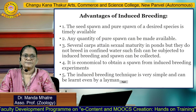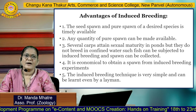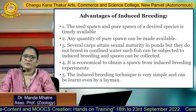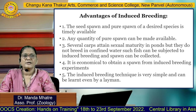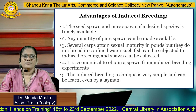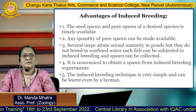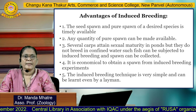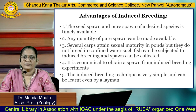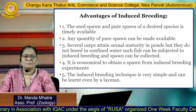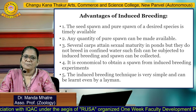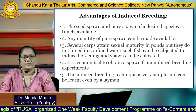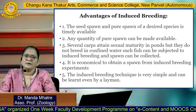Advantages of induced breeding: pure spawn of the desired species is timely available for the farmers. Any quantity of pure spawn can be made available. Several fishes that attain sexual maturity in ponds but do not breed in confined water can be subjected to induced breeding and spawn can be collected. It is commercially viable to obtain spawn from induced breeding. The induced breeding technique is very simple and can be learned even by a layman, making it the most favored technique among aquaculturists.